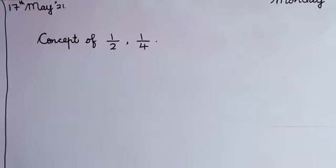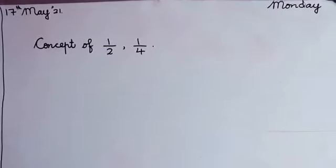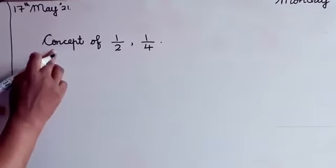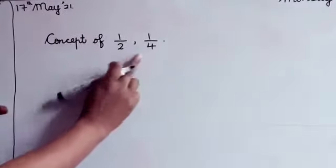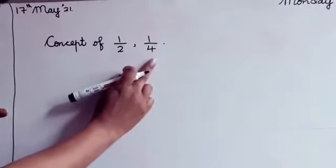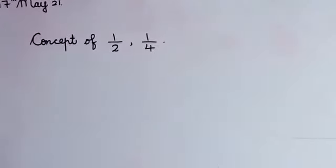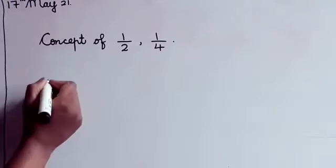Okay, so you are going to revise all the tables again. Do you understand everybody? Now we'll do the maths. Look at the board everybody — today we'll do the new topic, that is the concept of halves and quarters, how to do the halves and quarters. We'll draw the pictures only.